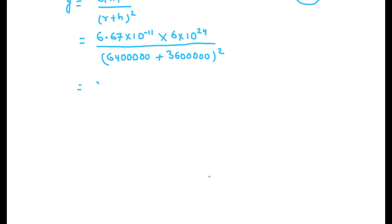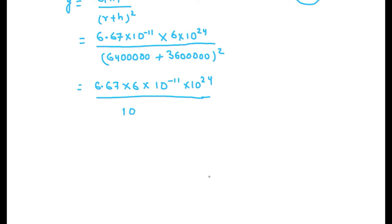Arranging the values: 6.67×10⁻¹¹ into 6×10²⁴ in the numerator. First add 6,400,000 plus 3,600,000, then square it. The sum gives 10,000,000 which is 10⁷, and 10⁷ whole squared gives 10¹⁴.